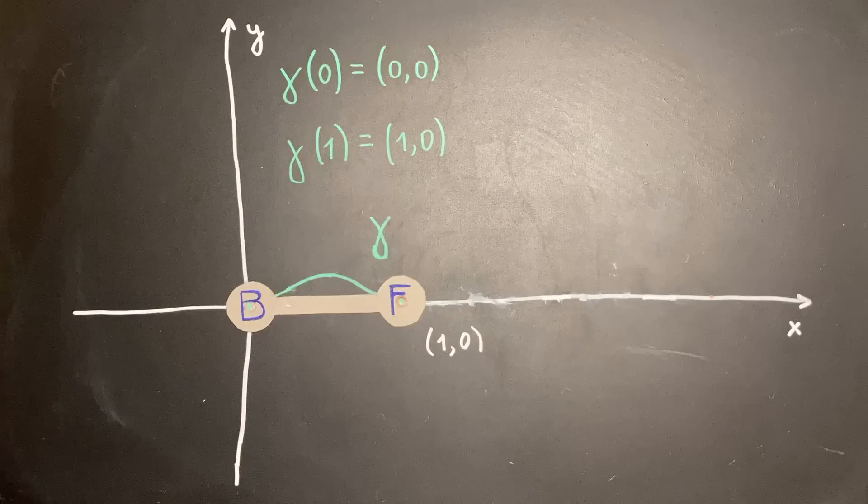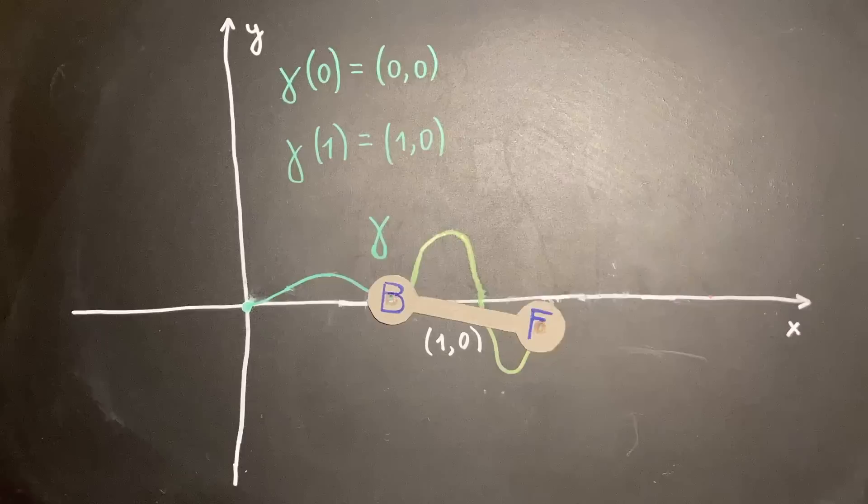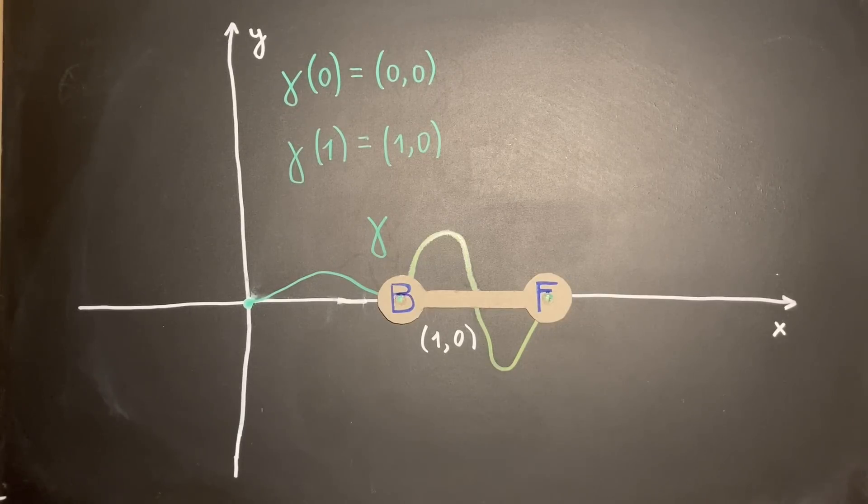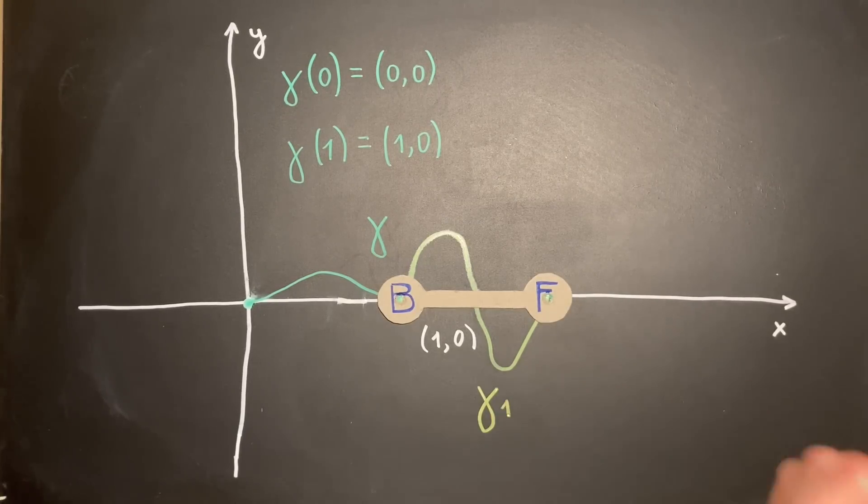When we roll the back wheel along the seat curve, the front wheel follows a unique trajectory named the first iteration of the seat curve, or gamma_1.